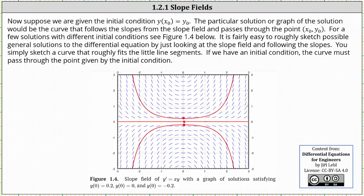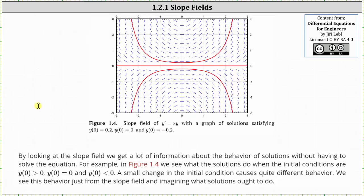It is fairly easy to roughly sketch possible general solutions to the differential equation by just looking at the slope field and following the slopes. You simply sketch a curve that roughly fits the line segments. If we have an initial condition, the curve must pass through the point given by the initial condition. By looking at the slope field, we get a lot of information about the behavior of solutions without having to solve the equation. For y of zero greater than zero, we have all solutions above the x-axis where the graphs open upward. When y of zero equals zero, we have the horizontal line. And when y of zero is less than zero, we have all solutions below the x-axis, which open down. A small change in the initial condition causes quite different behavior, and we see this just from the slope field.